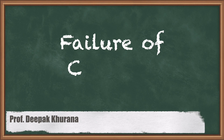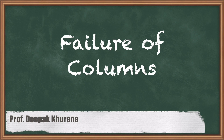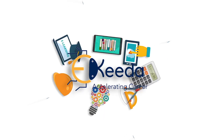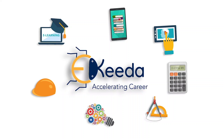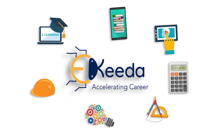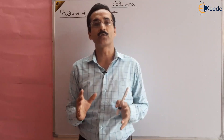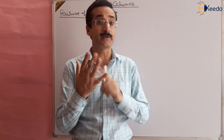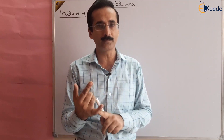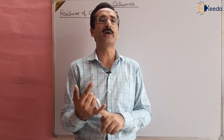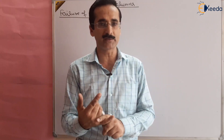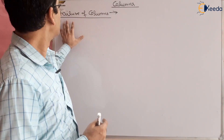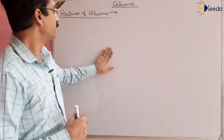Hello students. In this session we are going to study failure of columns — how the columns fail. We have already studied the slenderness ratio, that is the length of the column divided by the minimum radius of gyration. Based on that, we are going to study the failure of columns.